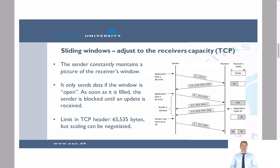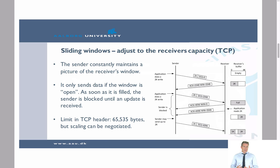With a window size of 2KB, the application makes a 2KB write and sends that data. The sender then becomes blocked because it has sent all the data that fits into the window. When the receiver sends the acknowledgement back, it indicates a window size of 0, and the sender remains blocked.